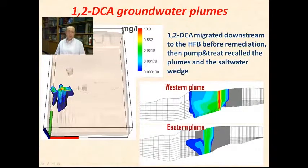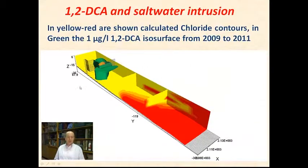What about the plumes? Of course, the 1,2-DCA immigrated downstream of the physical barrier before remediation and the pump and treat recall the plumes and the salt-water wedge. This is the results of our model, which clearly indicated that the physical barrier act clearly as a real barrier to the diffusion of the contaminants downgrading to the shoreline. But if you have some concentration of this contaminants located downstream, the extreme downgrading of your hydraulic barrier and, of course, of your physical barrier is not easy to recover due to the presence of the stagnation zone. This is the results, graph results of our model.